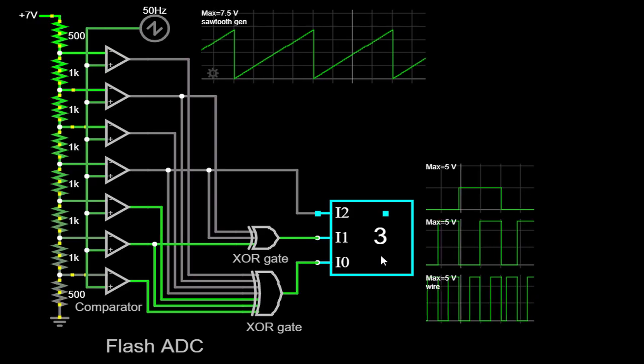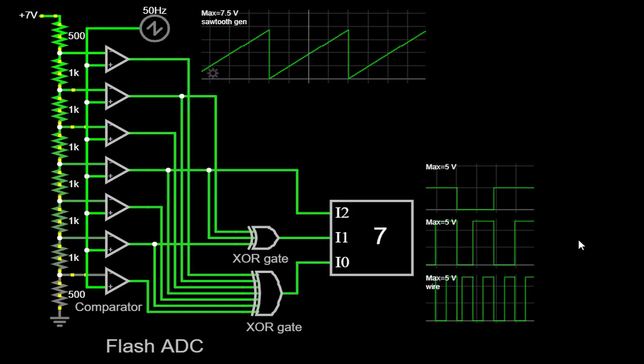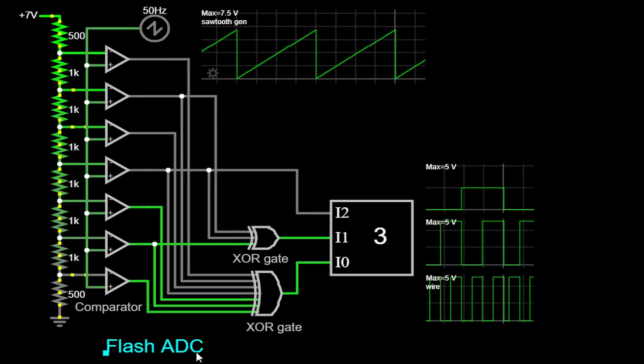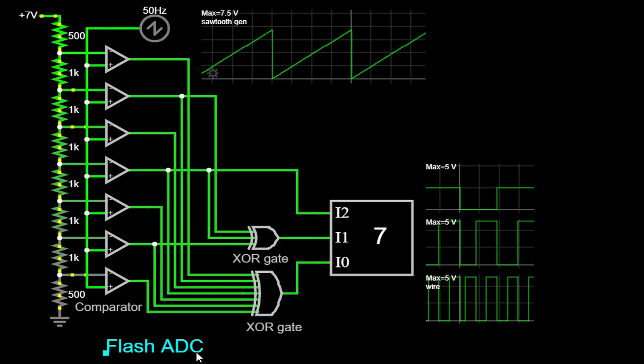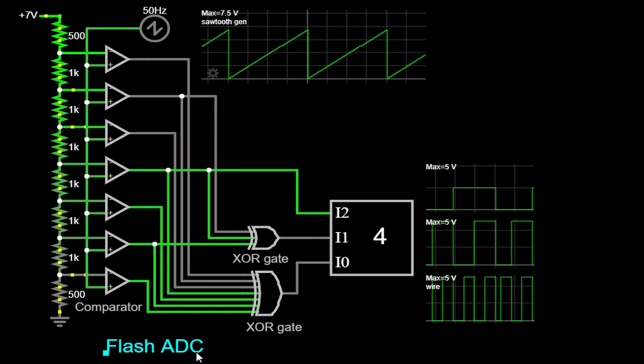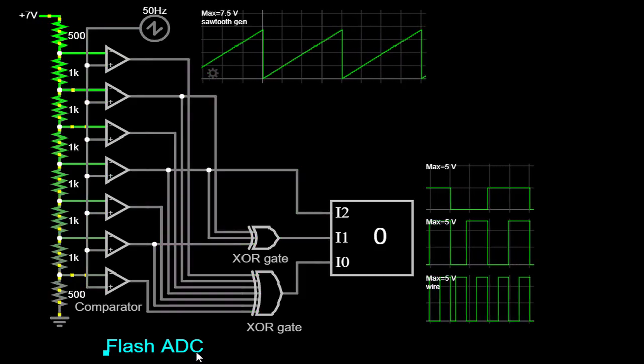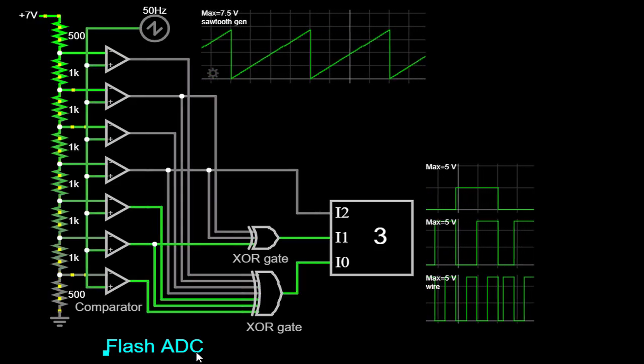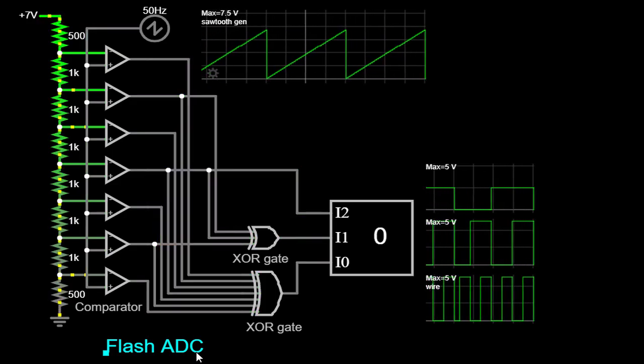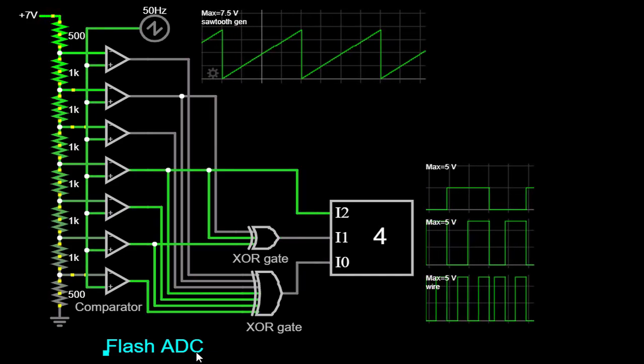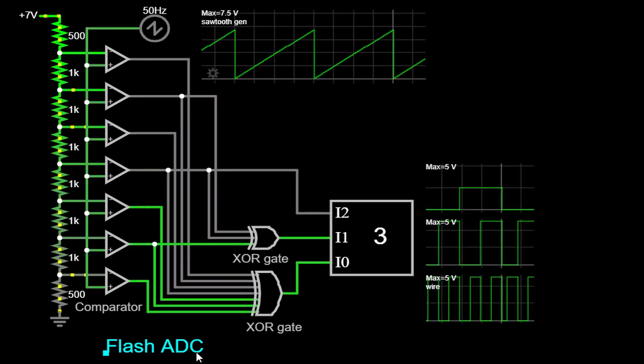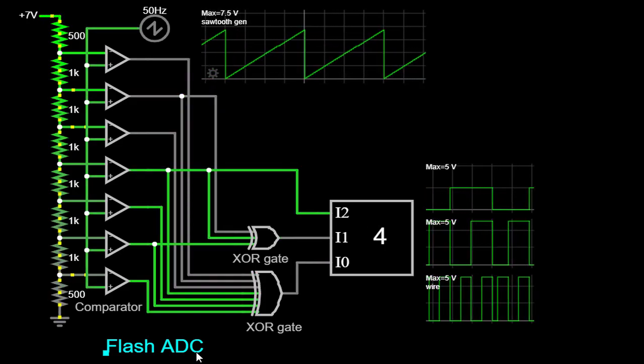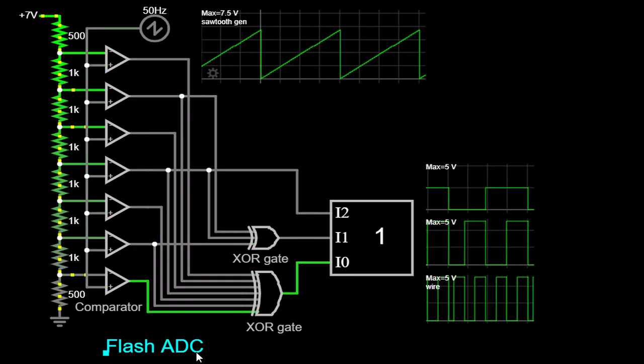such as high-speed data acquisition systems, telecommunications, and image processing. In conclusion, Flash ADCs play a vital role in modern electronics, facilitating the conversion of analog signals into digital representations. In this video, we explored the working principle of a Flash ADC and provided a demonstration of its functionality using a simulator. By employing a 50Hz 3.75V sawtooth waveform as our input signal, we gained insights into the conversion process and witnessed the Flash ADC in action.